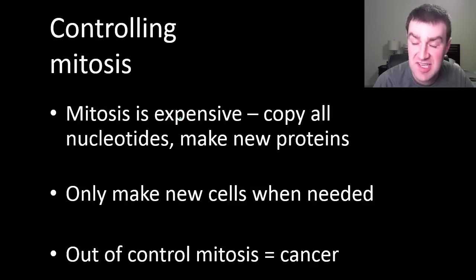Okay so but the last thing I want to say is that it's really important that the body control mitosis because mitosis is expensive. It requires a lot of resources to build an entire copy of all the DNA. It requires a lot of energy and amino acids to make new proteins that are needed just for cell division. So you're really spending a lot of resources and a lot of ATP to do mitosis.